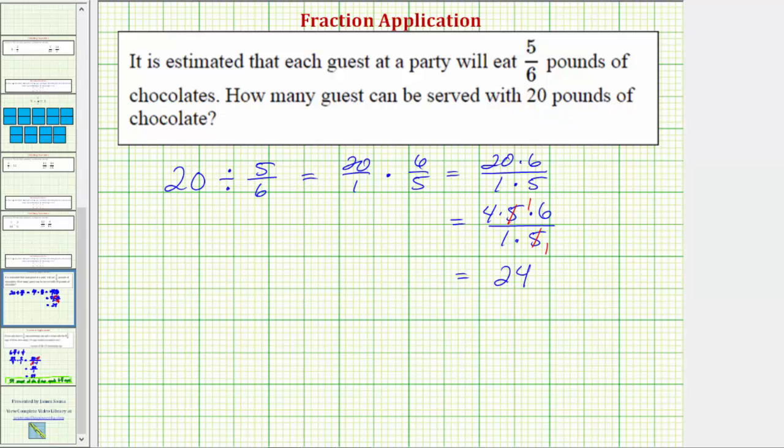I do want to show one other method for simplifying that you often see. We look at this part again, where we have 20/1 times 6/5. If we recognize that 5 and 20 share a common factor of 5 here, because there's one 5 in 5 and four 5s in 20, we can show the simplifying by simplifying 5 to 1 and 20 to 4.